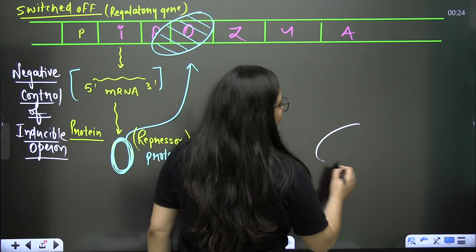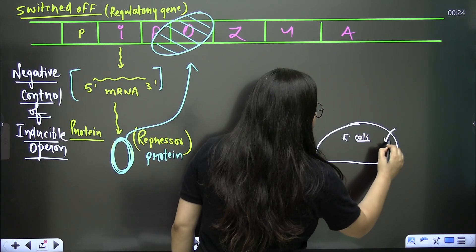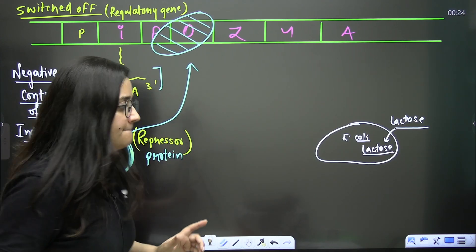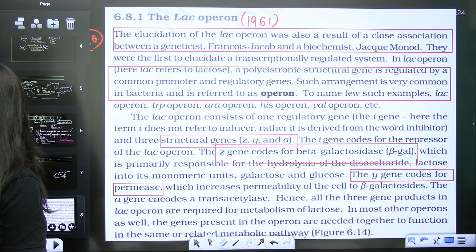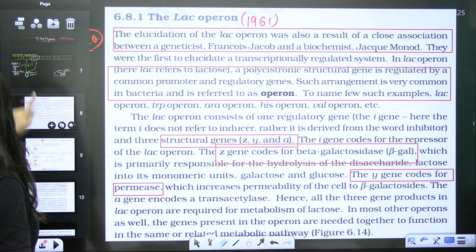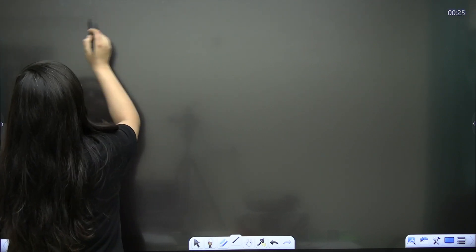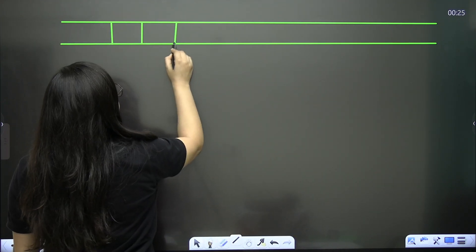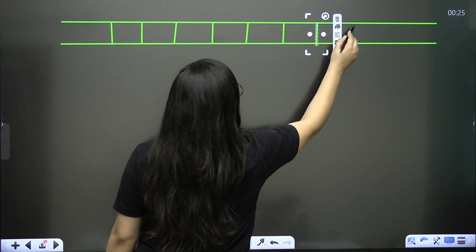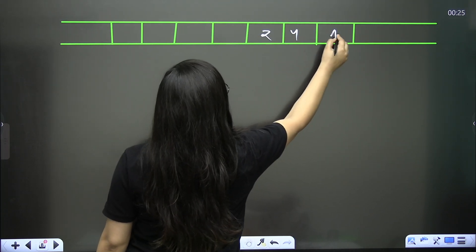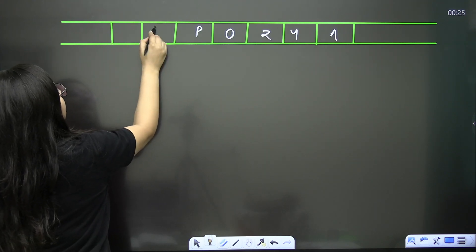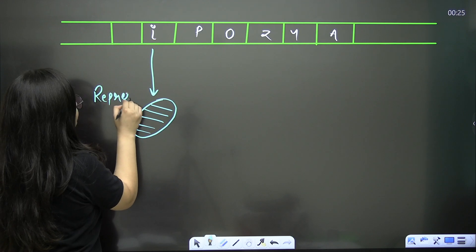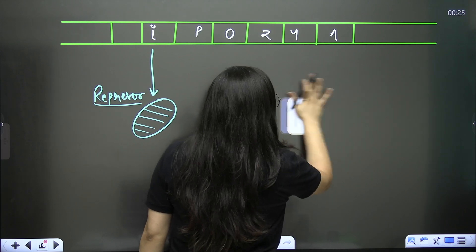To switch the lac operon on: even when it is switched off, some amount of lactose enters the E. coli cell. I'll explain how this is possible later — for now, just remember that a small amount of lactose does enter the cell.